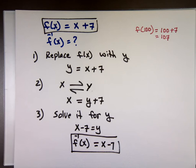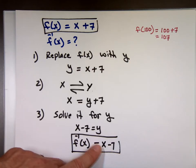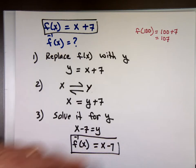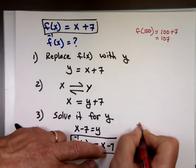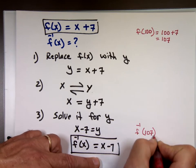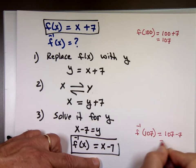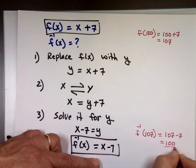Now, if we did it right. If I take the 107 and plug it in here, guess what I'm going to have? Better be the 100. Get it back. So, what's the inverse of 107? It's 107 minus the 7 which is what? 100. 100.